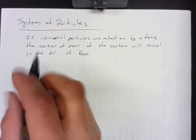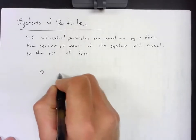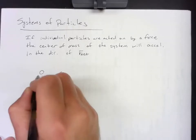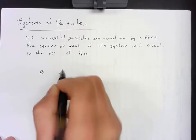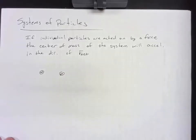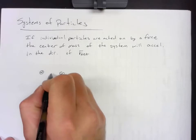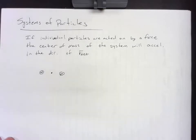So if I have a mass here and a mass here, and we'll say that they're the same mass and they are stationary, we know that the center of mass of those two objects is in between them.